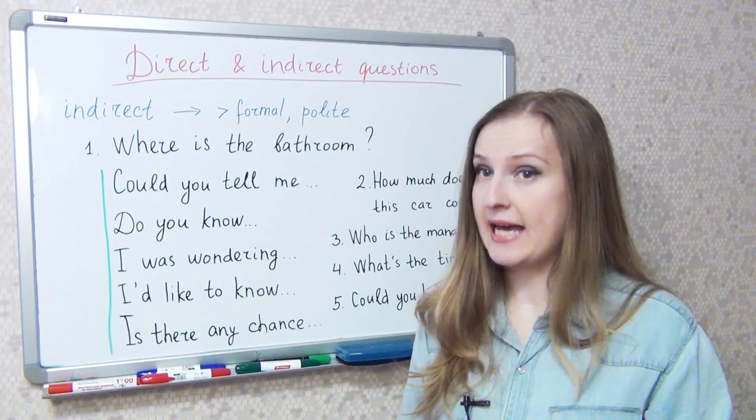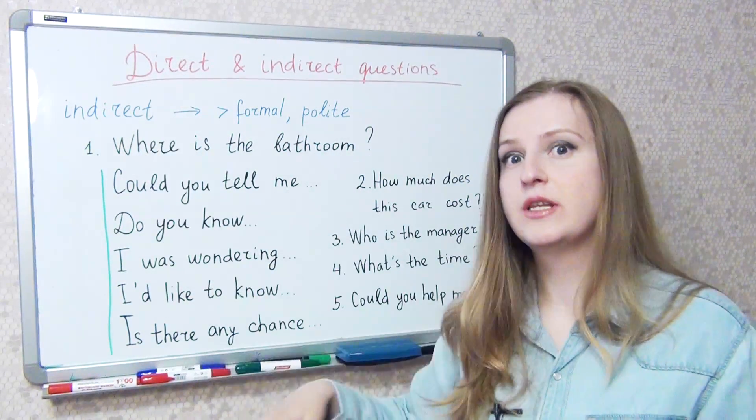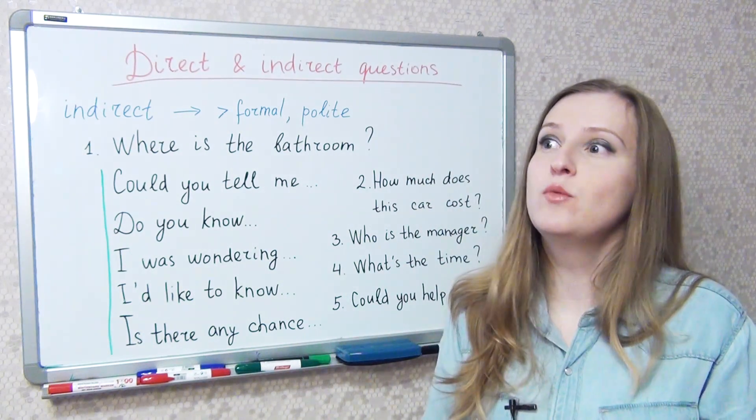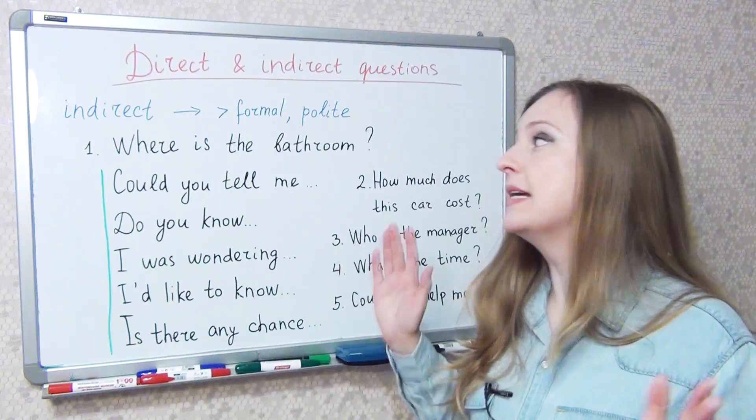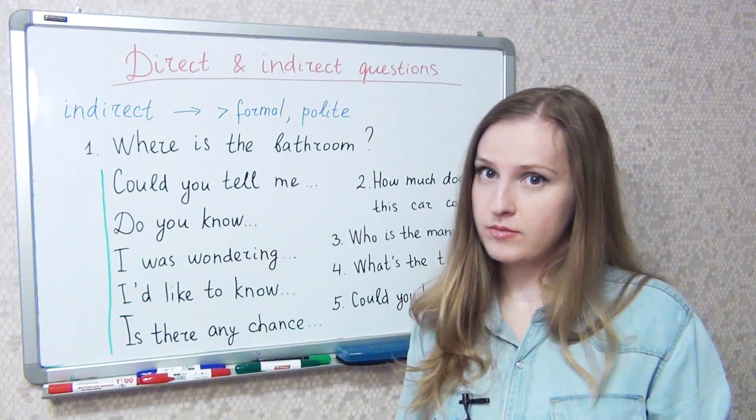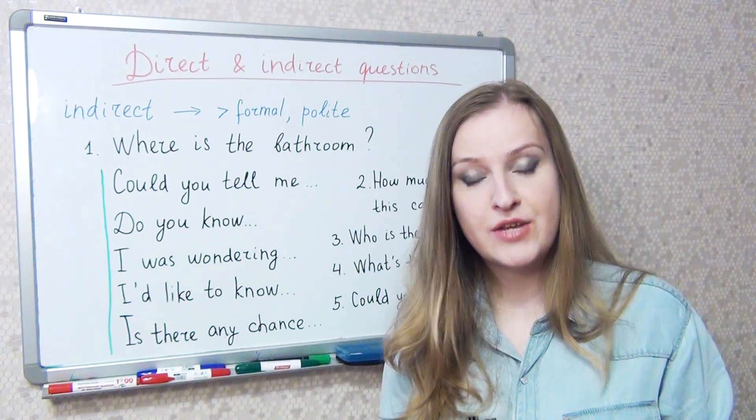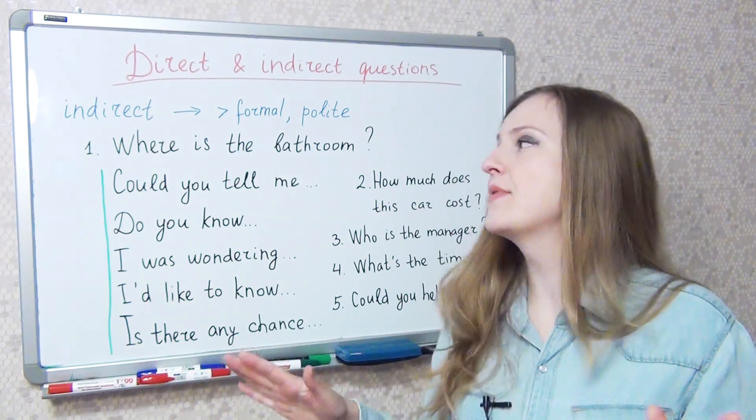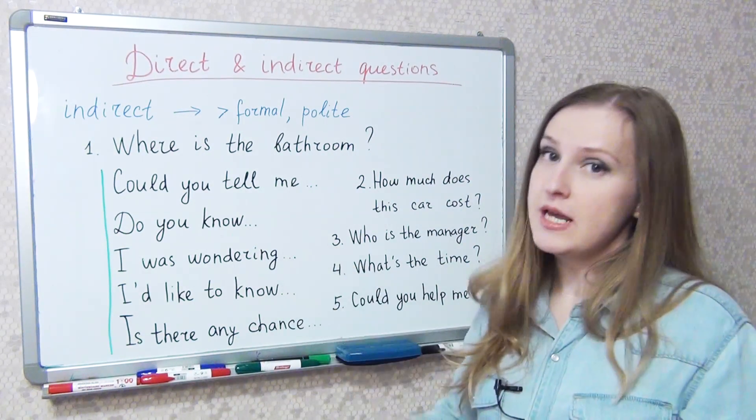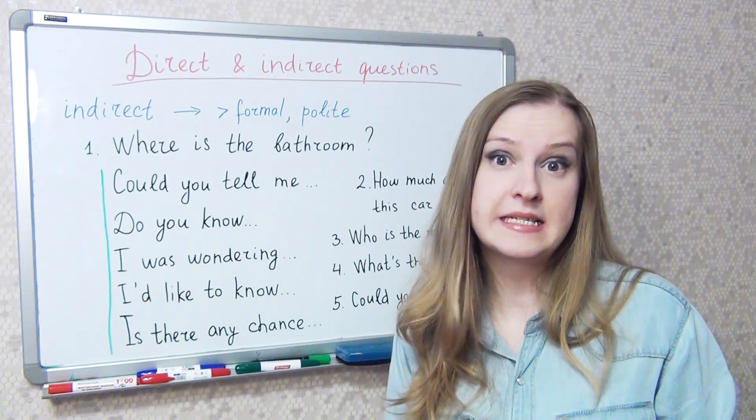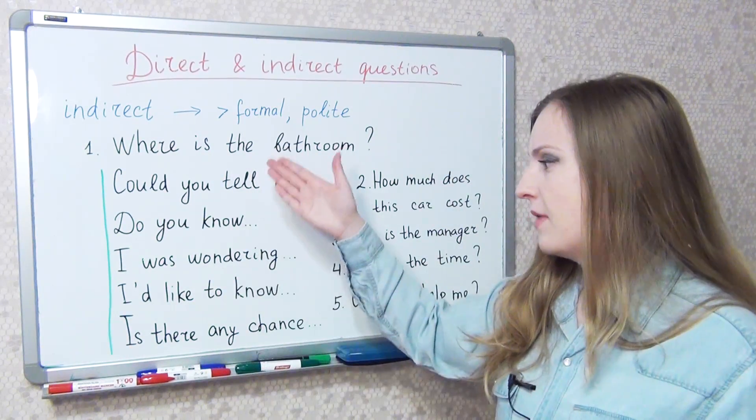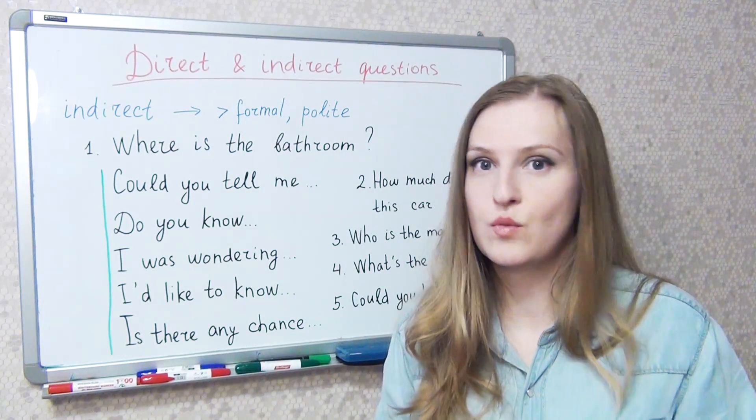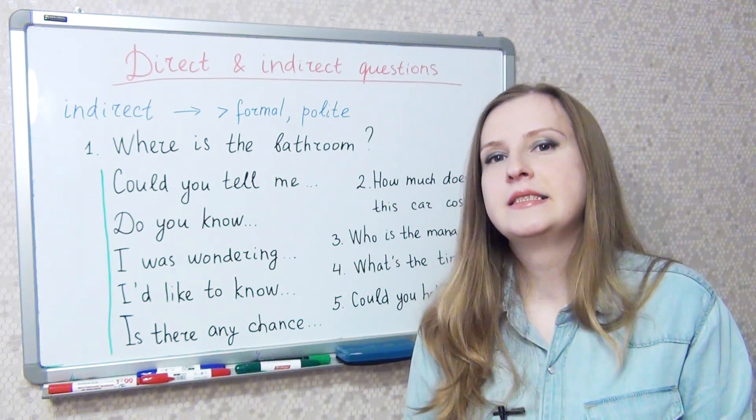I should add that indirect questions are usually more formal and more polite. Therefore, if you address someone you know well, you can simply ask, where's the bathroom? But if you ask a stranger, better use an indirect question and say something like, could you tell me please where the bathroom is?